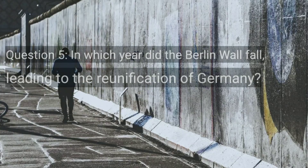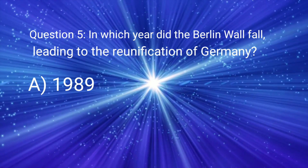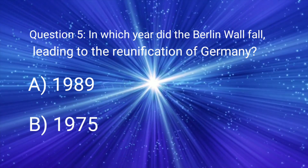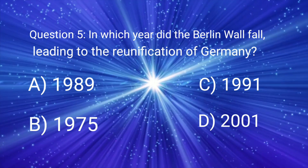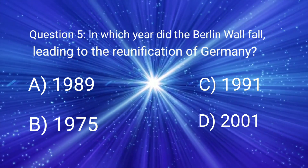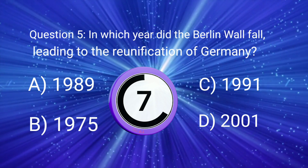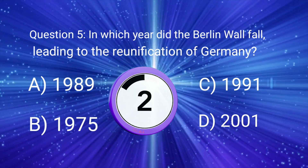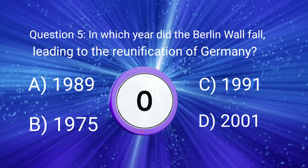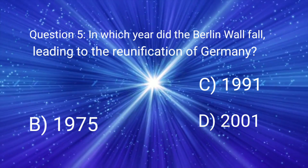Question 5. In which year did the Berlin Wall fall, leading to the reunification of Germany? A. 1989, B. 1975, C. 1991, D. 2001. You have only 10 seconds to think. Your time is starting now. Okay, friends, your time is up. The right answer is A. 1989.